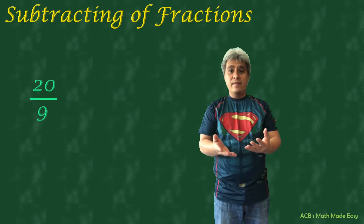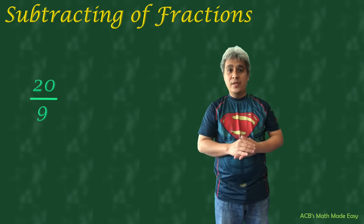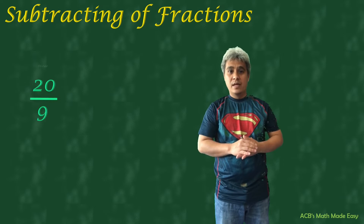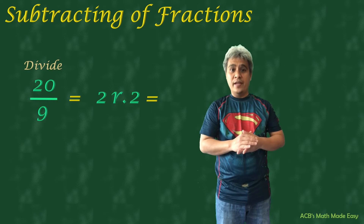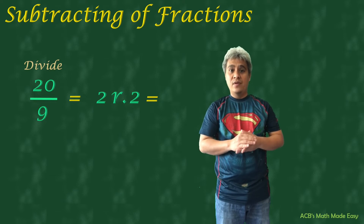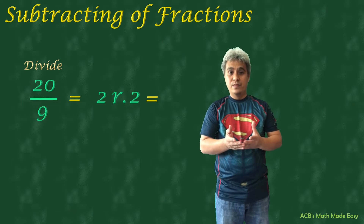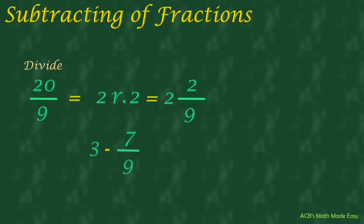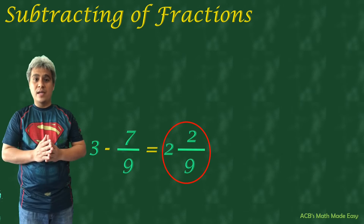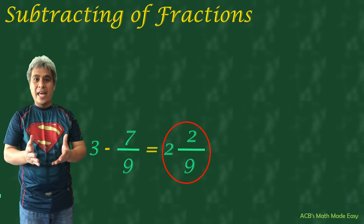20 over 9 is our answer, but we need to simplify it. Since this is an improper fraction — the numerator is greater than the denominator — we simply divide it. If you divide 20 by 9, we get an answer of 2 remainder 2. So our answer is 2 and 2 over 9. Therefore, 3 minus 7 over 9 equals 2 and 2 over 9.